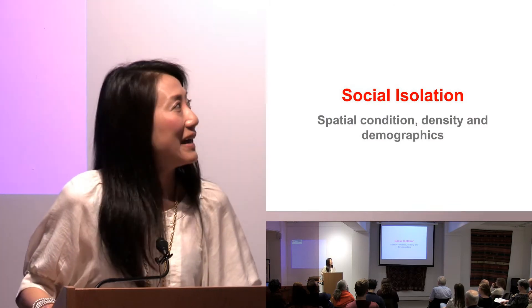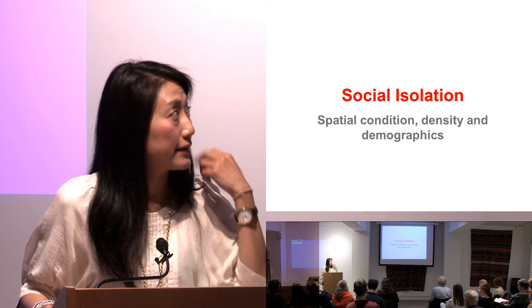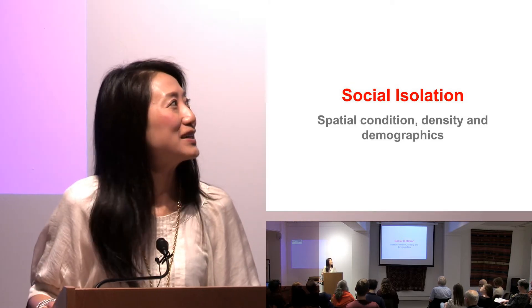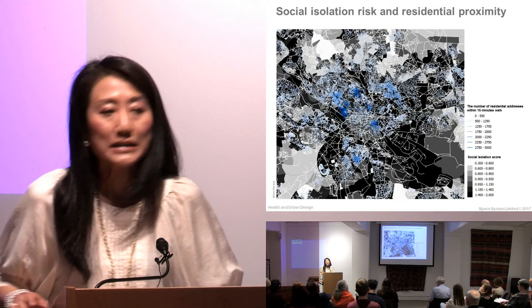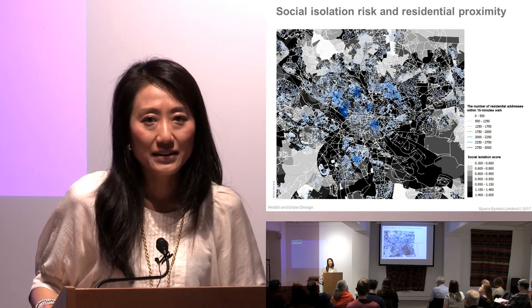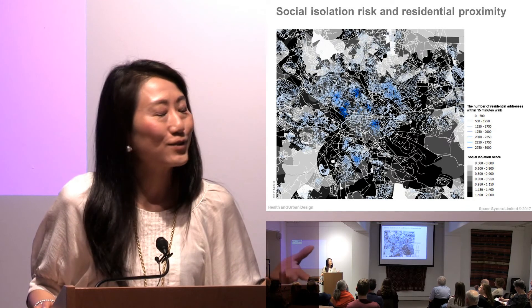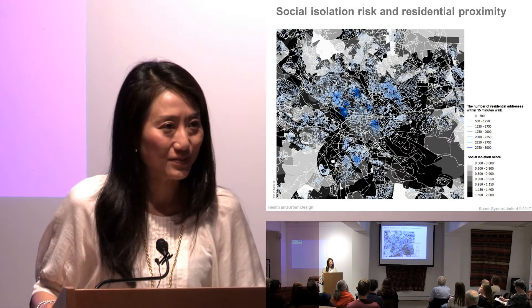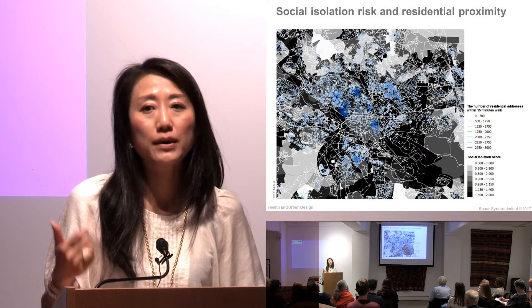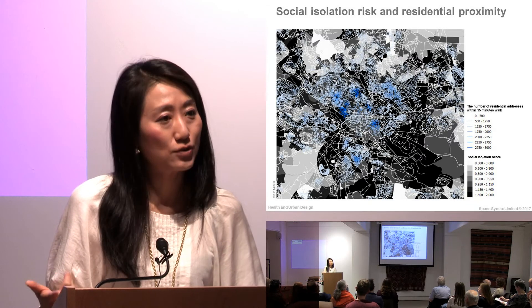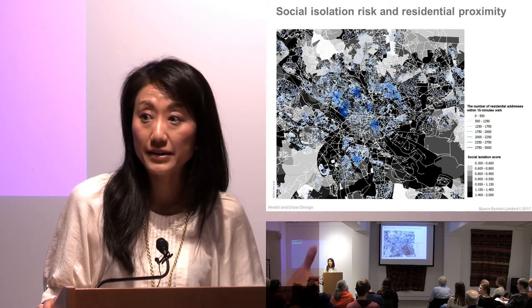The last area is social isolation, which is influenced by social conditions, spatial conditions, density, and demographics. We used an Age UK published index for social isolation, which mainly includes demographics such as age and health condition. Based on the demographics, you can identify the high-risk population and where they live.